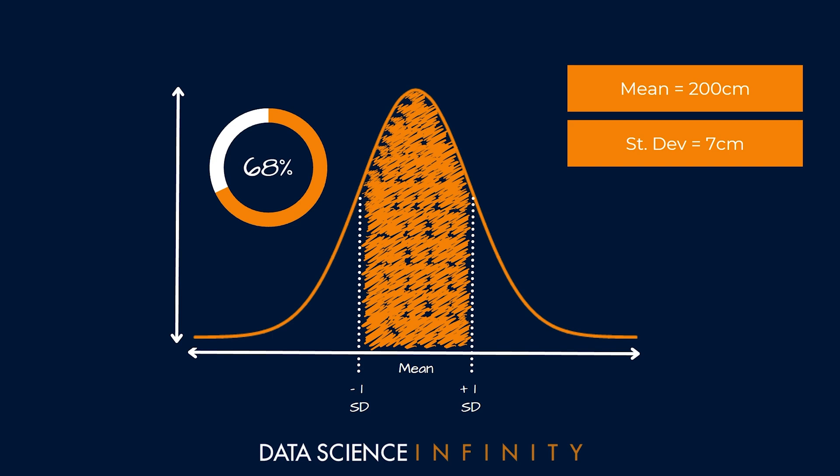Since we know that the mean is 200 centimeters, these two values, the ones denoted by the dotted lines on screen, would be 200 centimeters minus the standard deviation of 7 centimeters and 200 centimeters plus the standard deviation of 7 centimeters.